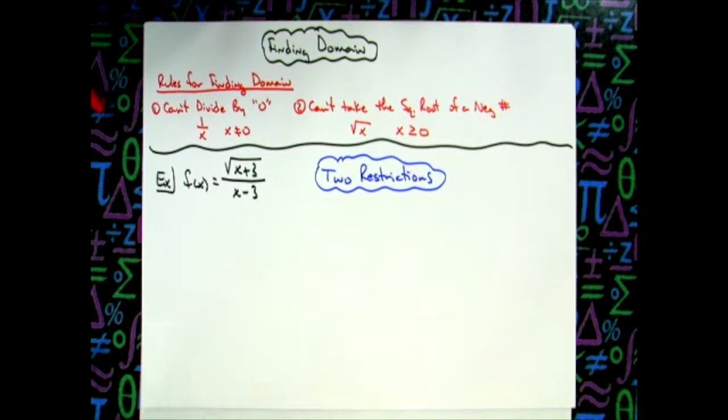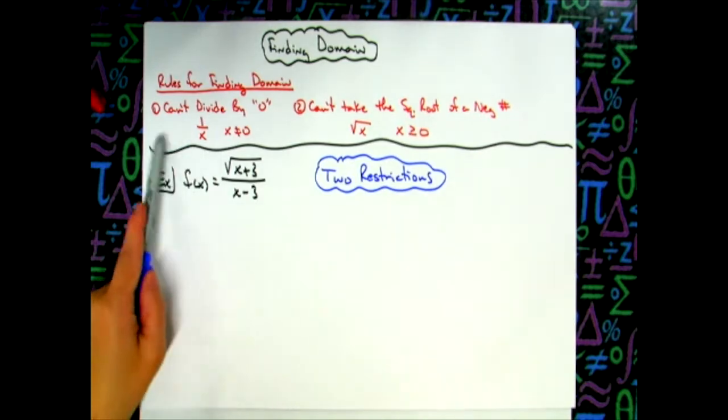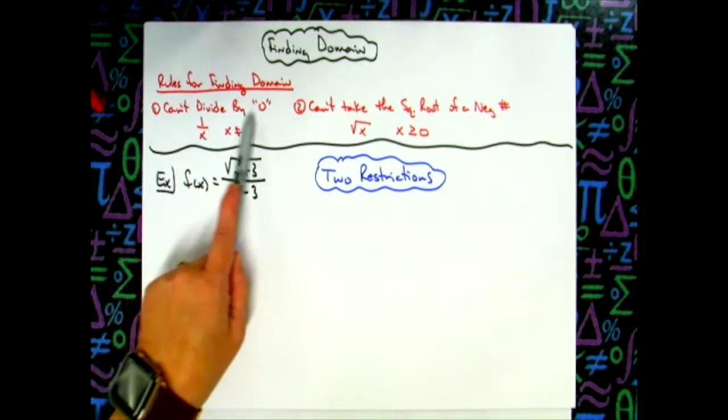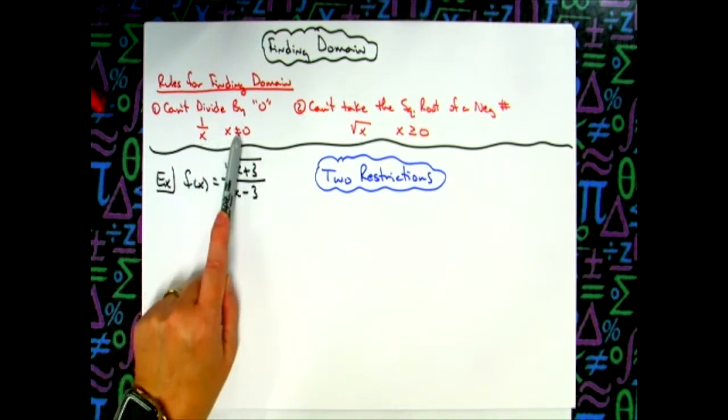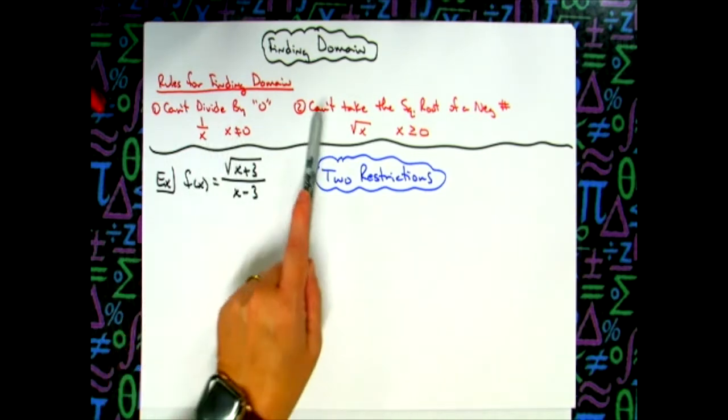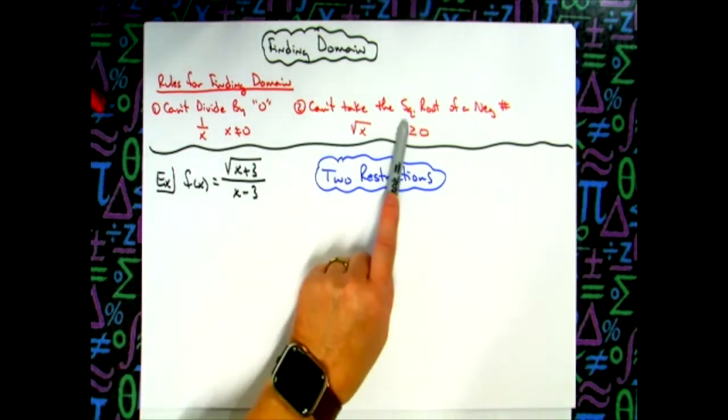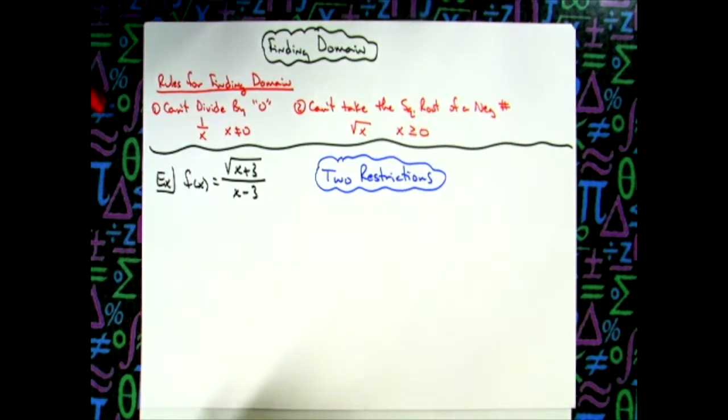Now to be able to do this we've got to make sure that we know our rules for finding domain. There's two major rules that we cannot break. One says that we can't divide by zero. So if we had a rational function that denominator cannot ever equal zero. We also cannot take the square root of a negative number. That's assuming we're working in the real number system.